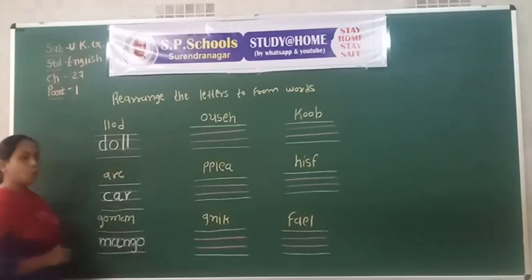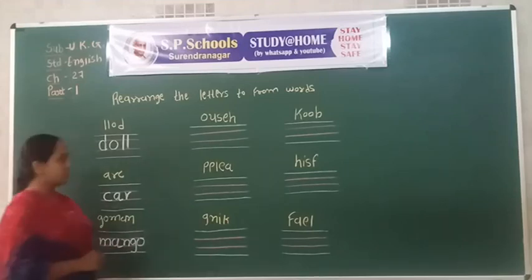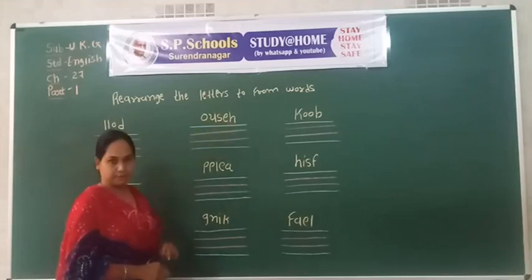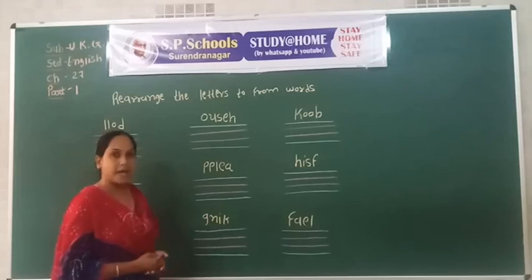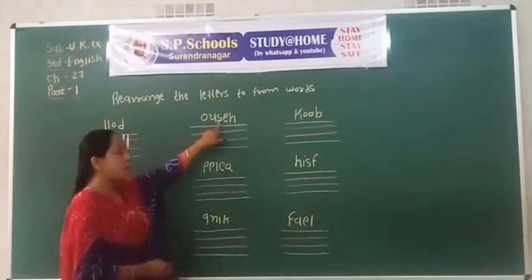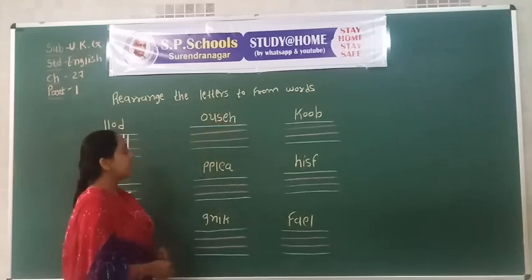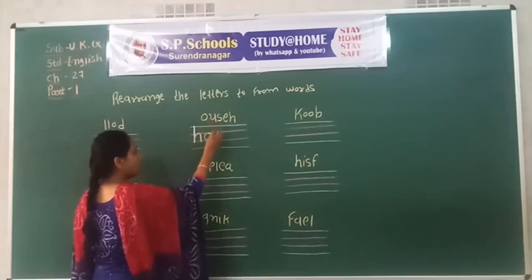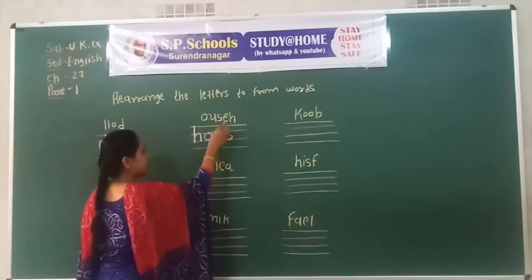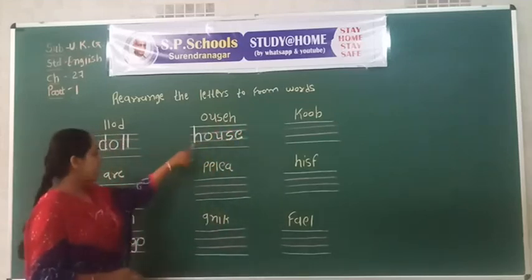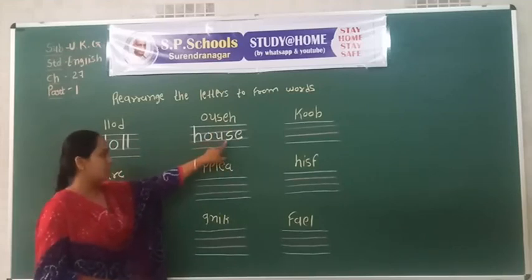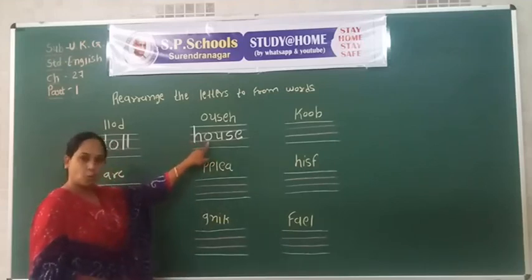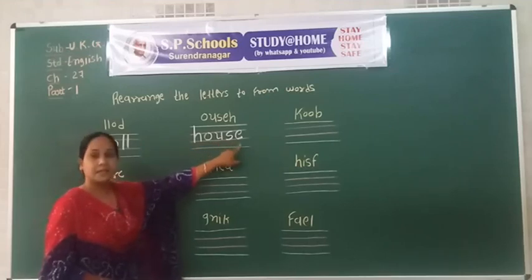Next word: O, U, S, E, H. House! A, H, O, U, S, E. The correct word is House.